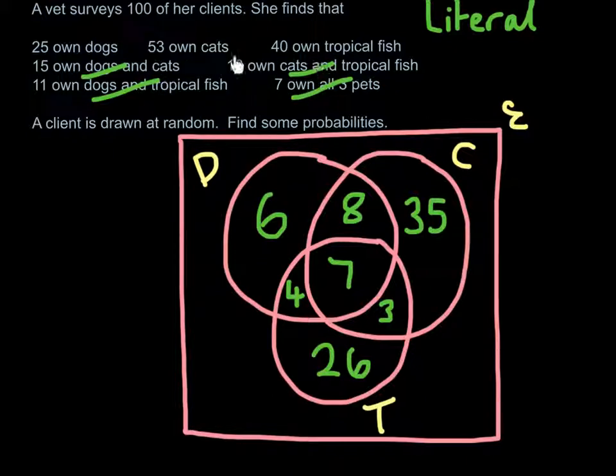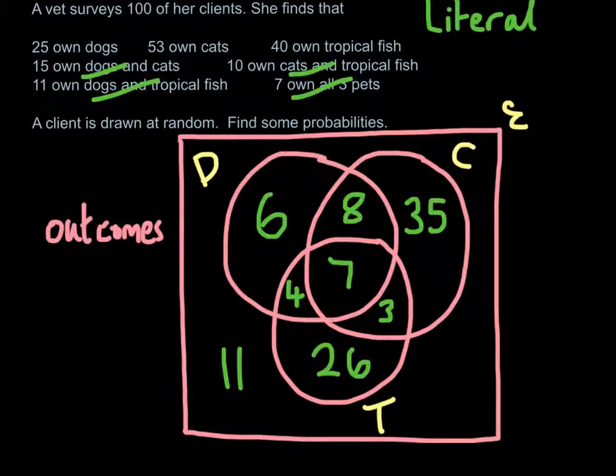Now, it's still not finished, because we know she's got 100 clients altogether. So you want to double-check, because there might be clients there that own, I don't know, a lion, or a tiger, or something. So don't own a dog, and a cat, or a tropical fish, basically. So we do need to fill in a number on the outside of the circle. So there's 11 people. If you add all those numbers up together, take them away from 100, you get 11. So that means there's 11 people that don't own a dog, a cat, or a tropical fish. So these are all the outcomes.